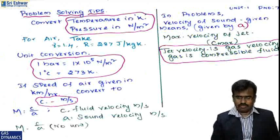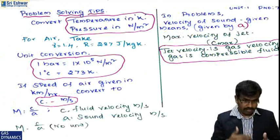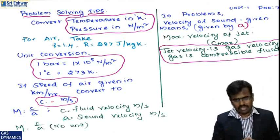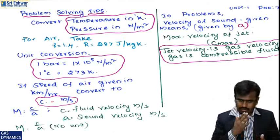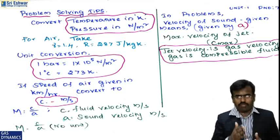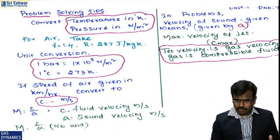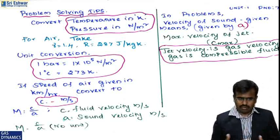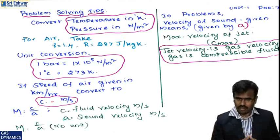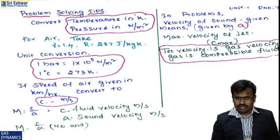Some tips to solve problems: first, convert temperature to Kelvin if given in degrees Celsius. If pressure is given in bar, convert to N/m². For air, γ = 1.4 and R = 287 J/kg·K. If speed is given in km/h, convert to m/s. Mach number M = c/a, where c is fluid velocity in m/s and a is sound velocity in m/s — it is dimensionless since it is a ratio.